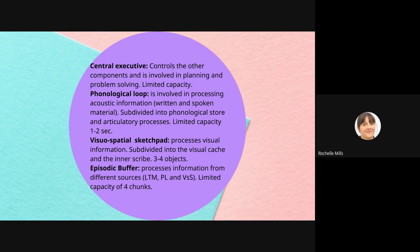Then we have the visuospatial sketchpad, which processes visual information. This is subdivided into the visual cache and the inner scribe. The visual cache stores visual data. The inner scribe records the arrangement of objects in the visual field. It has a limited capacity, and Baddeley conducted research in 2003 and suggested that the capacity was about three or four objects.